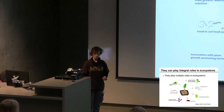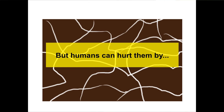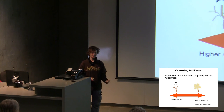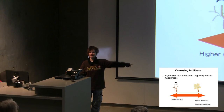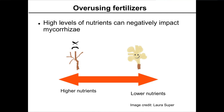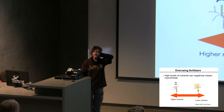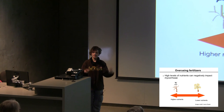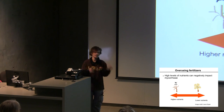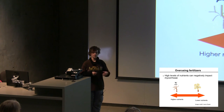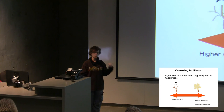Humans can hurt mycorrhizae by overusing fertilizers. Why does this relationship break down with excess fertilizer? It's like a relationship — if someone has everything they need, your role in that relationship isn't useful anymore. If a plant has enough nutrition, it won't really need its mycorrhizal helper. Also, mycorrhizae can sometimes become parasitic — there's a continuum. It's really important to think about the things we do in our environment because they can promote a loss of this natural mycorrhizal association.